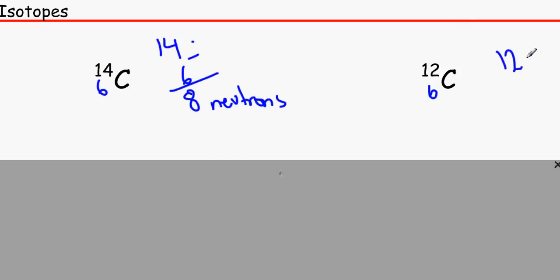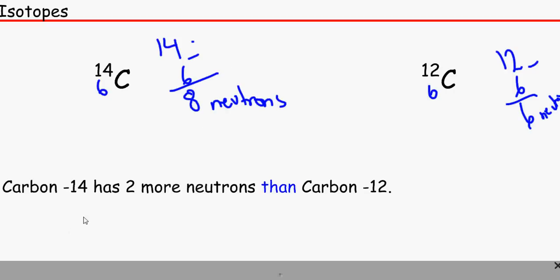12, which is the number of protons and neutrons, minus 6, which is 6. So there are 6 neutrons here and 8 neutrons here. So that means carbon 14 has 2 more neutrons than the carbon 12. You need to compare both of them. You need to write both of them in that sentence otherwise you will not get the mark.